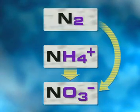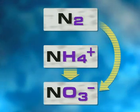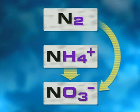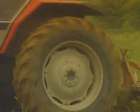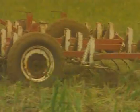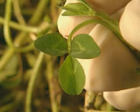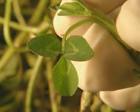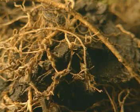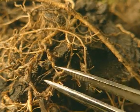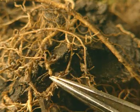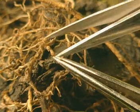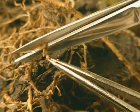Another process involves nitrogen-fixing bacteria, which take up atmospheric nitrogen. Nitrogen-fixing bacteria exist free in the soil or in the roots of certain plants, like clover. Special nitrogen-fixing bacteria, called rhizobium, live in tiny nodules on the roots. The bacteria convert atmospheric nitrogen into ammonium ions and eventually proteins.